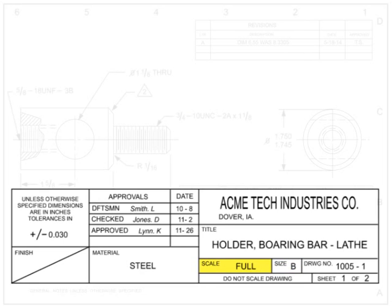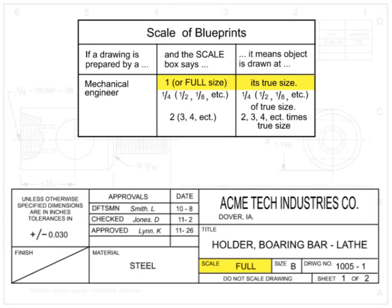The scale block indicates the size and scale of the drawing. Some items, such as large machines or buildings, are simply too large to be drawn life-size. Drafters have the choice of drawing things to scale, larger, or smaller than the actual item. The first number on the scale corresponds to the size on the print; the second is the size of the part. One-to-one indicates full scale, one-to-two indicates the drawing is one-half the size of the actual part, and two-to-one indicates the drawing is twice the size of the actual part.